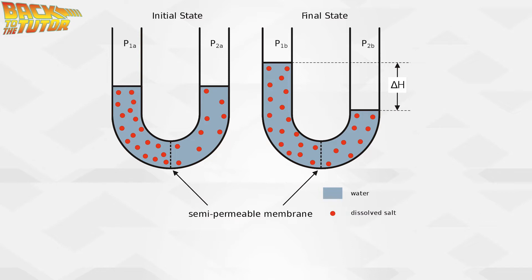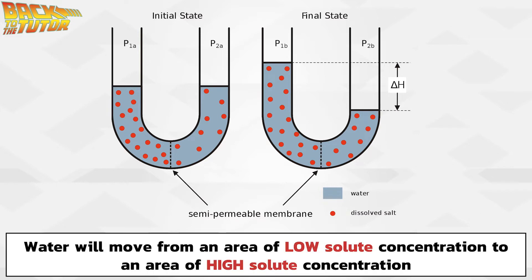If you separate the two sides with a semi-permeable membrane and put a more concentrated solution in one side — in this case the left — over time, water would move across the membrane to the side with a higher solute concentration, making the solute concentrations more similar on both sides, until equilibrium was reached and the water levels would remain constant.